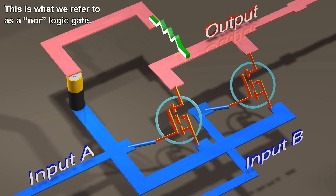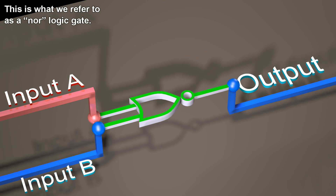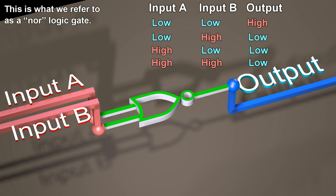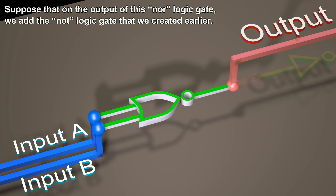This is what we refer to as a NOR logic gate. Suppose that on the output of this NOR logic gate, we add the NOT logic gate that we created earlier.